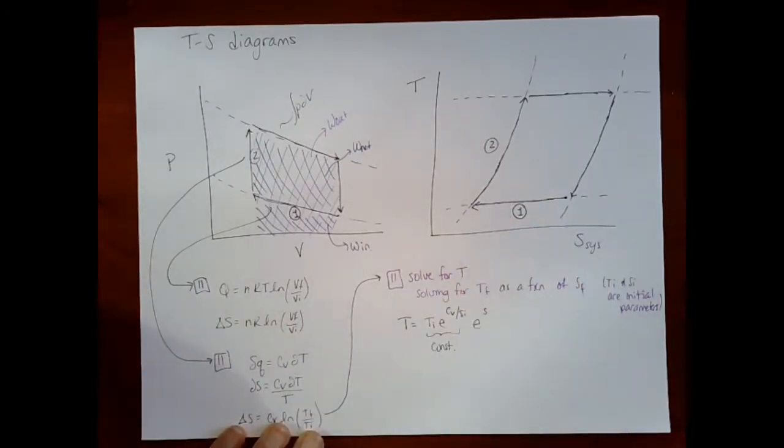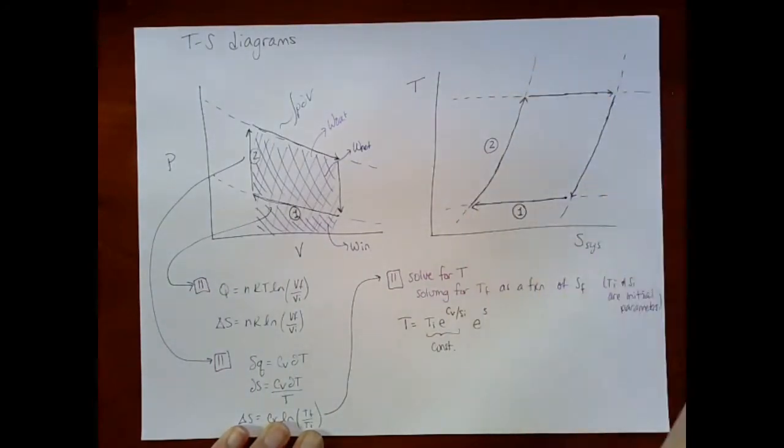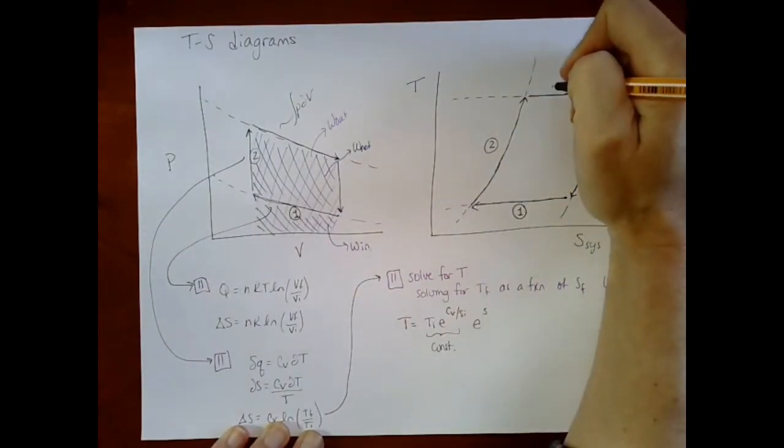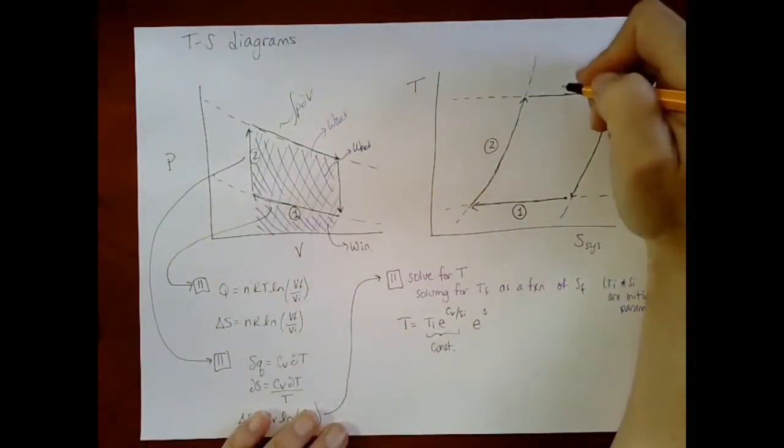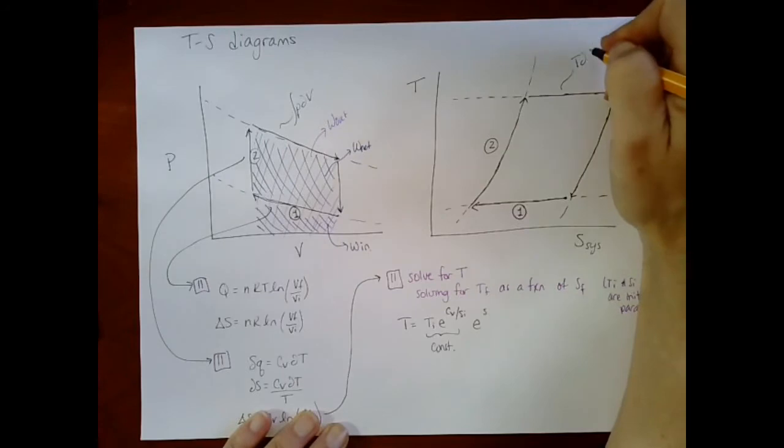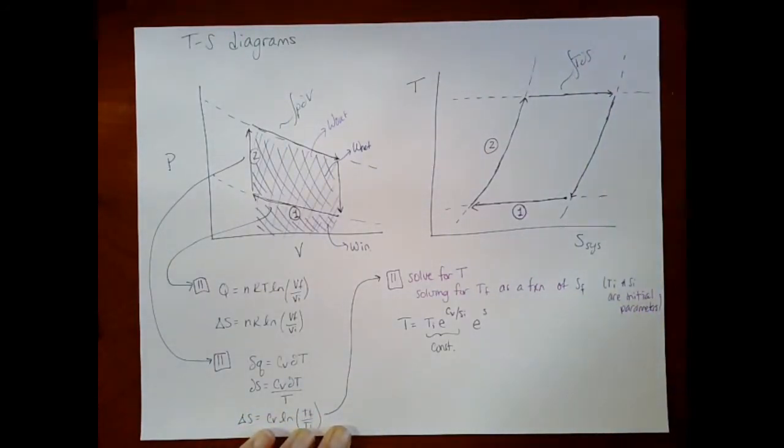Alright, so here what we have is we have T dS. All of these are functions of T dS. Let's use black. So if I think about the area under these curves, then that's equal to heat.